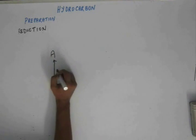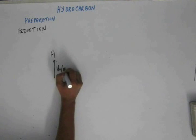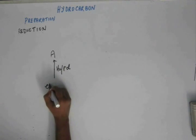Suppose this is A. A is being produced by hydrogenation of ethene.